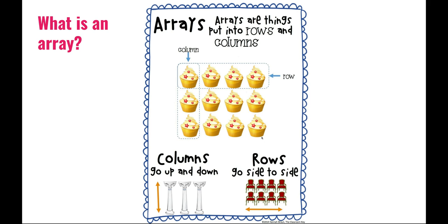It's important because this would not be an array if there were an extra cupcake here or there. If one of these rows had five cupcakes, it would no longer be an array, because in an array there has to be the same number of objects in each group or in each row.